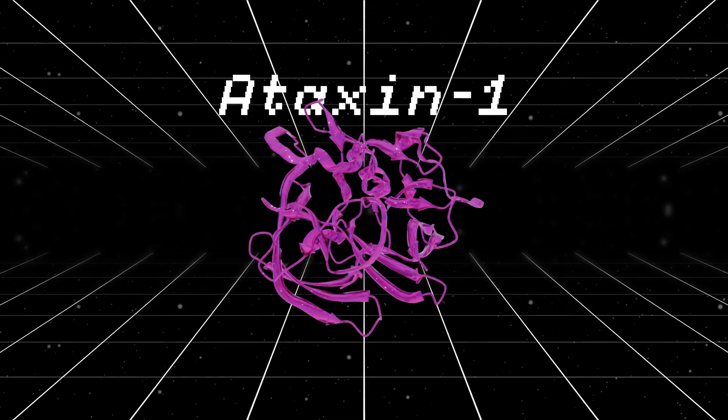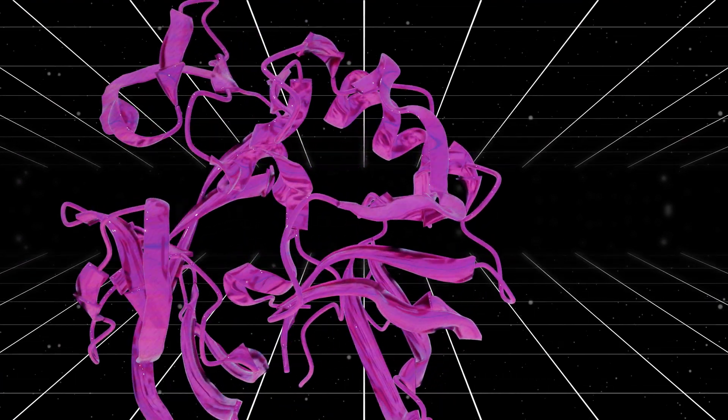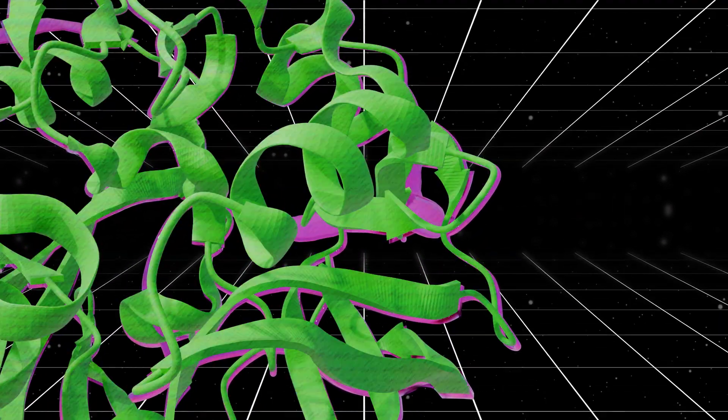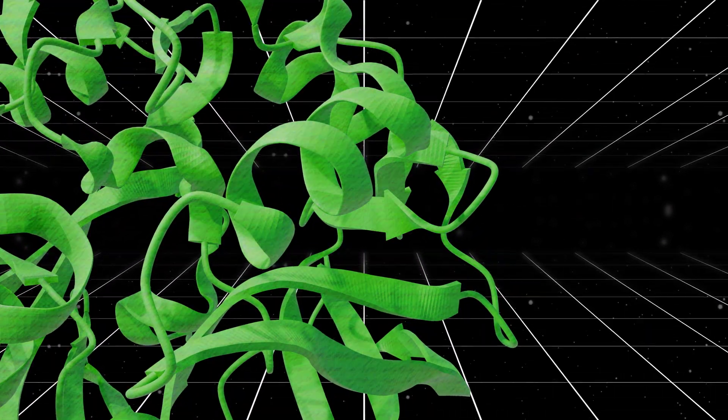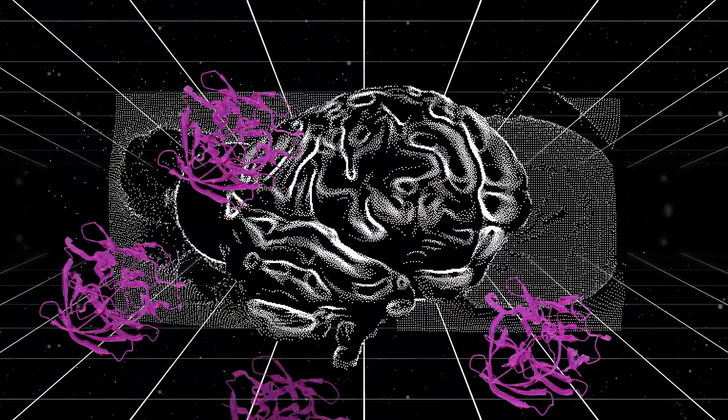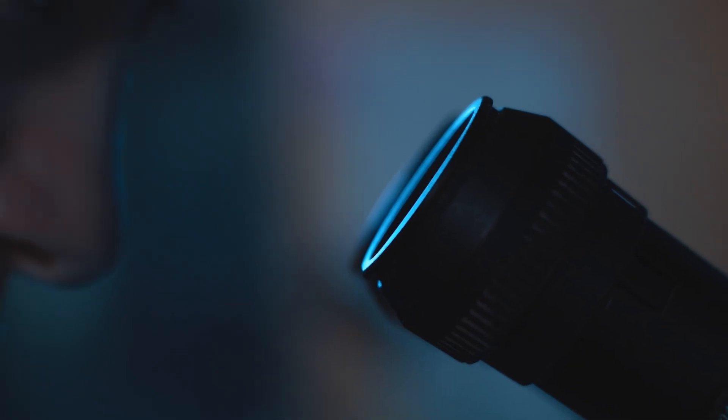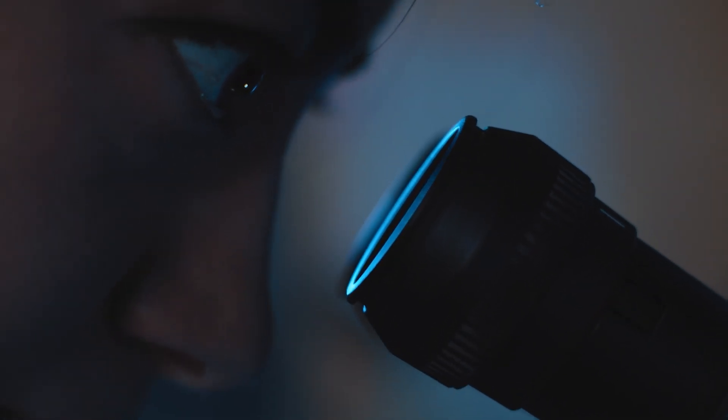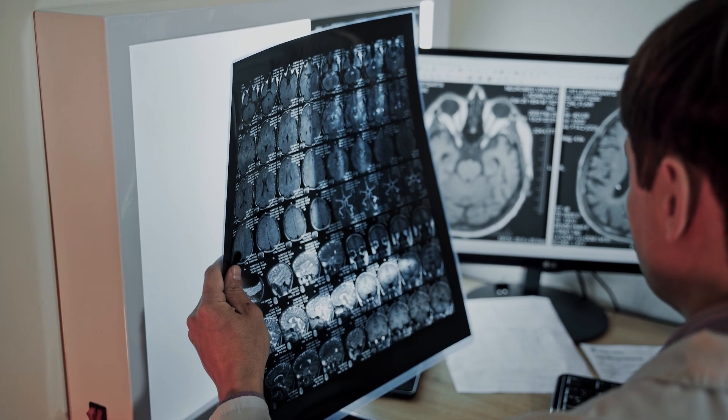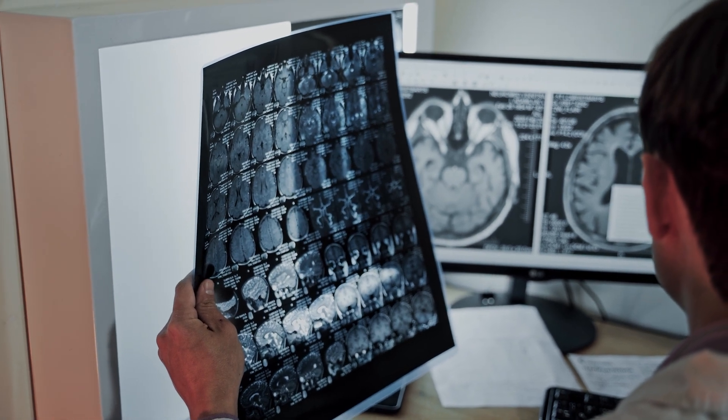But why do we care about protein folding? How does this relate to cancer and diseases? Well, let me show you. This is Ataxin-1. There's something different about this Ataxin-1 though. It's folded improperly. It's supposed to look like this. And the gradual increase in misfolded Ataxin-1 actually leads to Alzheimer's. If we could better understand the folding of this protein, as well as what causes it to misfold, we could better understand Alzheimer's and possibly come up with a cure.